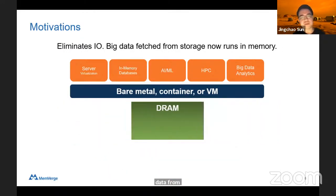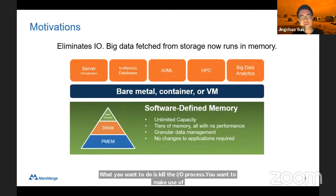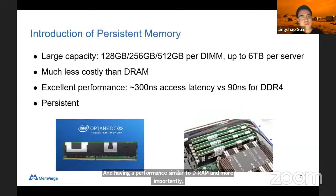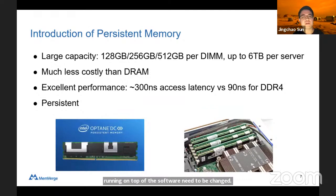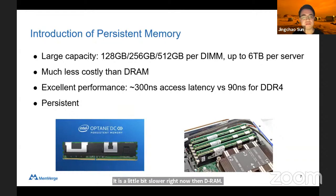What we want to do is kill the IO process. We want to make use of a new kind of hardware called persistent memory in order to eliminate IO between DRAM and disk. We will have large memory capacity and very good performance similar to DRAM. No application running on top of our software needs to be changed. This new hardware, called persistent memory, was introduced by Intel four years ago. It has very large capacity, is much cheaper than DRAM, has very similar performance — a little bit slower than DRAM but much faster than SSD — and has the capability of persistency.